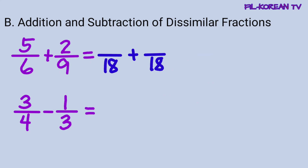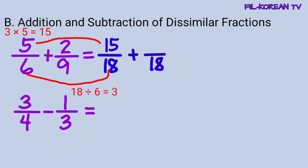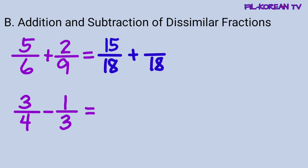Isulat natin dito. Ang susunod nating gagawin ay i-divide natin itong LCD sa denominators at i-multiply sa numerators para makuha natin ang bagong numerators. Gawin natin dito sa first addend. 18 divided by 6 equals 3. Itong 3, i-multiply natin ito sa numerator na 5. 3 times 5 equals 15. So, yung bagong numerator ay 15. Dito naman sa pangalawang addend, i-divide natin yung 18 divided by 9 equals 2. Itong quotient na 2 ay i-multiply natin sa numerator na 2. 2 times 2 equals 4. Kaya yung bagong numerator sa pangalawang fraction ay 4.